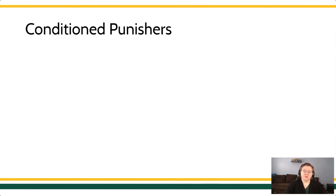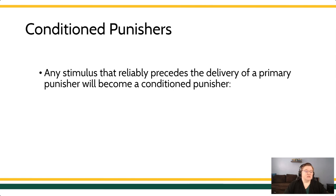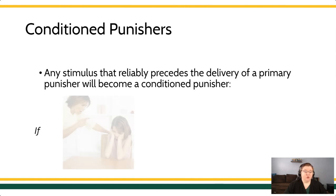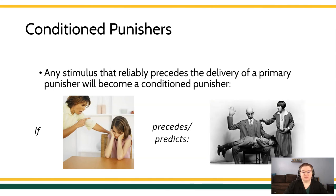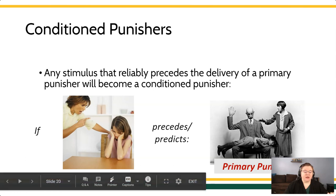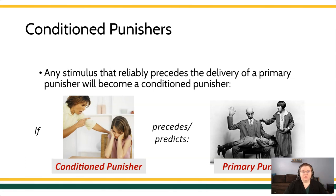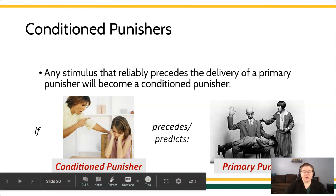We also see that there are certain kinds of conditioned punishers, and we're probably very familiar with these. A conditioned punisher is any stimulus that reliably precedes and predicts the delivery of a primary punisher. For instance, if a parent shouts and reprimands, and this reliably precedes and predicts some form of corporal punishment, then the yelling itself becomes the conditioned punisher, and the spanking — the pain delivered — would be the primary punisher. The conditioned punisher takes on its value through association with the primary punisher.